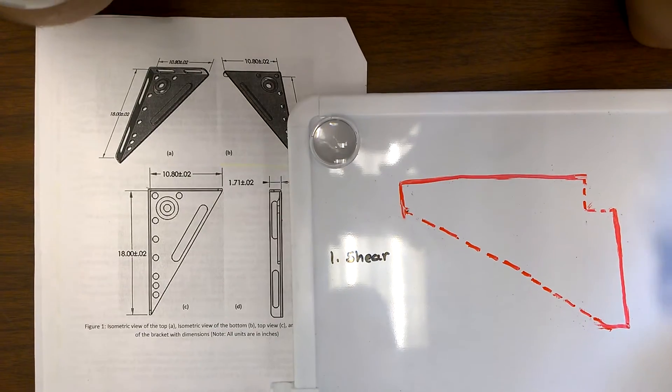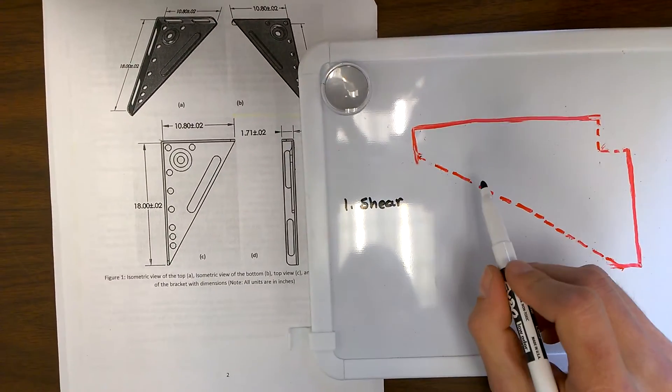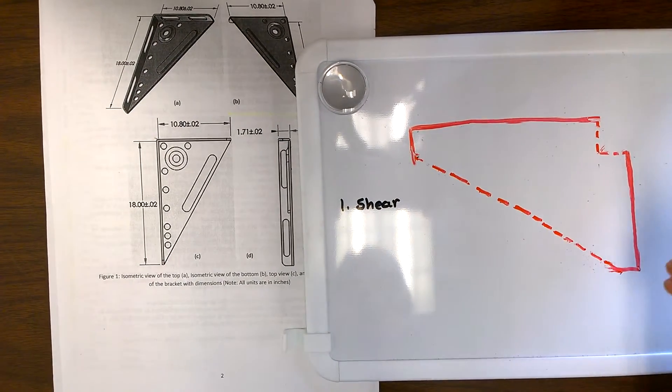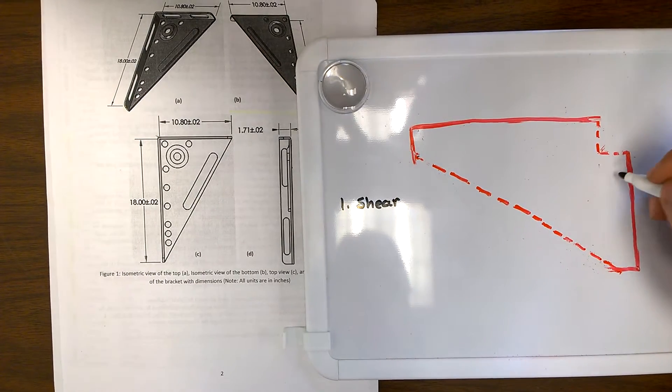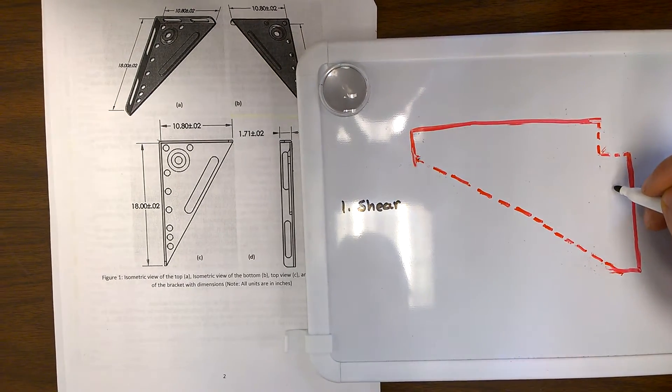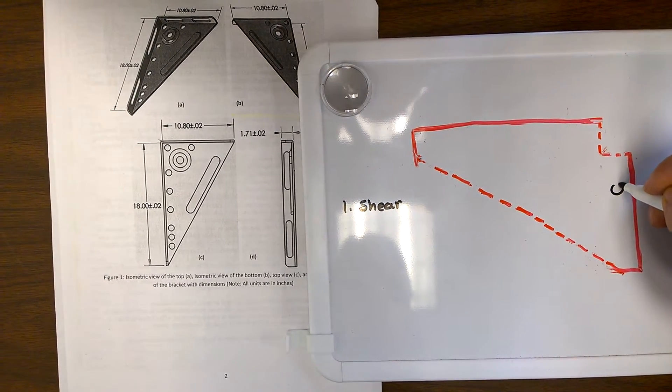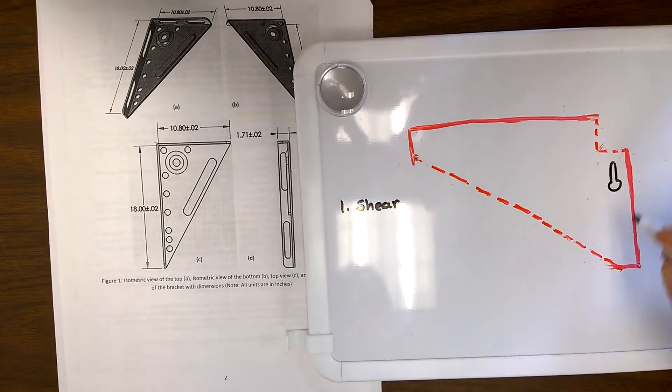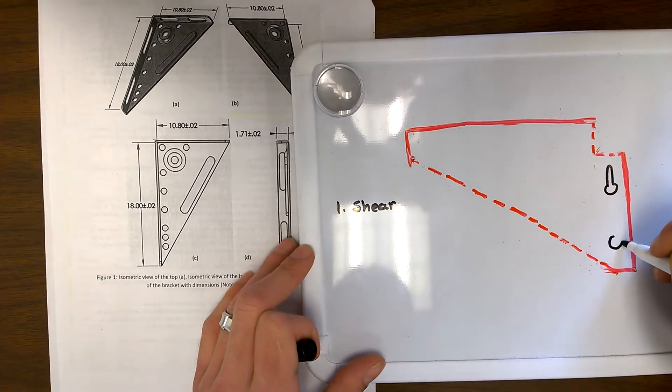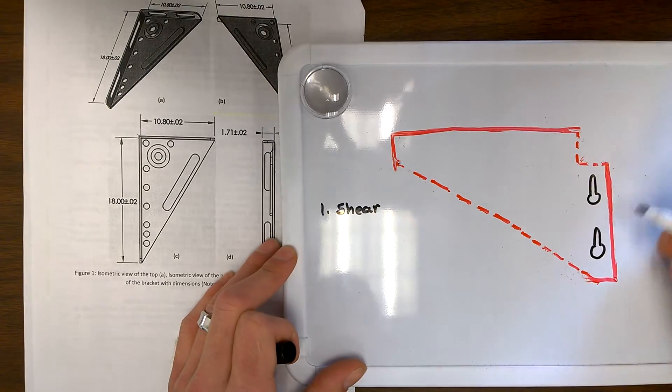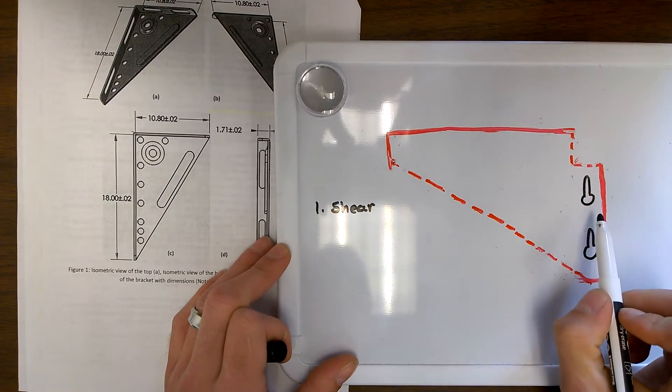Now what we want to do is pierce holes for our hardware slots. So we want to first pierce two holes back here. And the reason we chose this shape is so that one person can install the shelf.